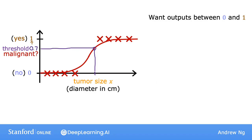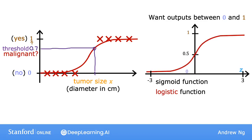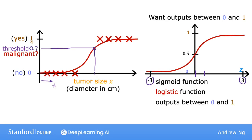To build up to the logistic regression algorithm, there's an important mathematical function I'd like to describe, which is called the sigmoid function, sometimes also referred to as the logistic function. The sigmoid function looks like this. Notice that the x-axis of the graphs on the left and right are different. In the graph to the left, the x-axis is the tumor size, so it's all positive numbers. Whereas in the graph on the right, the horizontal axis takes on both negative and positive values, and I've labeled the horizontal axis z, showing a range of negative 3 to positive 3.